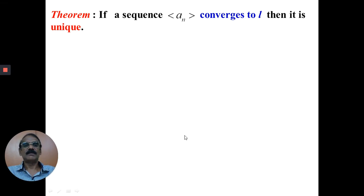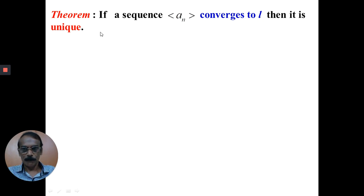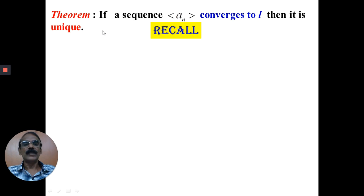If a sequence converges to a number, we have to show that that number is unique. The statement of the theorem is: if a sequence an converges to a real number l, then we have to show that that real number l is unique. For this, we will recall the definition of a convergent sequence.